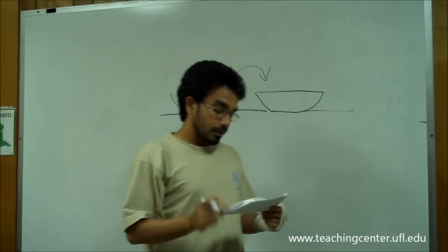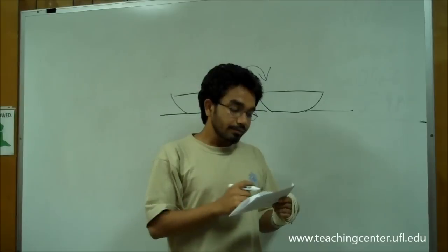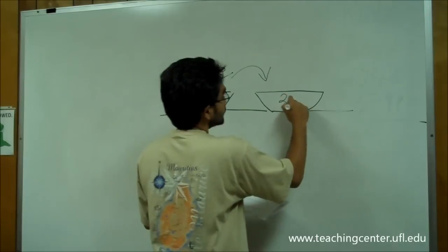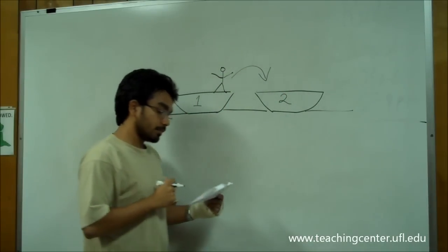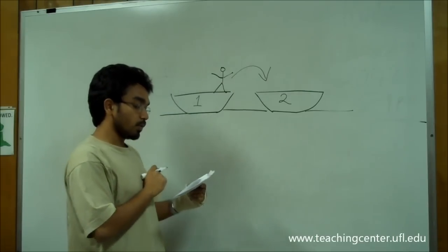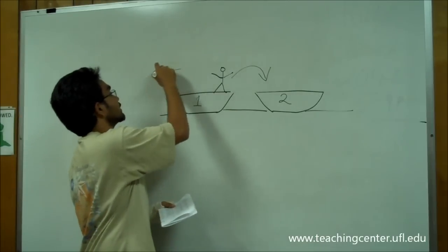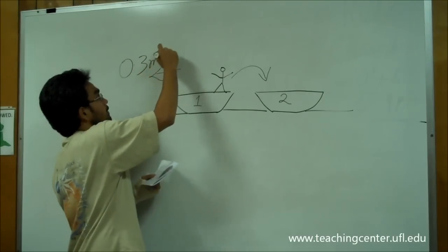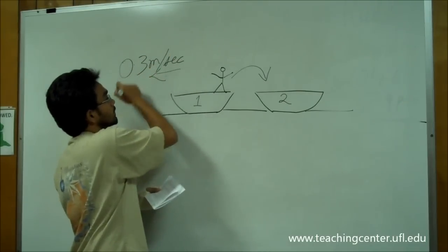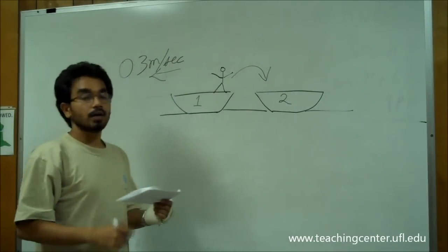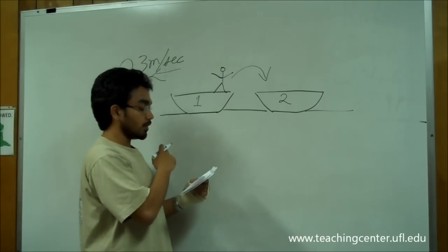Okay? And after that person jumped from boat 1 to boat 2, the speed of boat 1 was 0.03. Now, they want us to find the speed of boat 2 after the person has jumped from boat 1 to boat 2.